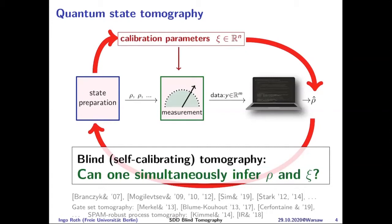A question arises about gate set tomography: is it proven to converge? Ingo clarifies it is absolutely not proven. What you're trying to do in gate set tomography is complete a matrix product state from its entries — you see a couple of entries of a tensor network and want to complete the entire tensor network. These are highly complicated problems. There are ideas to improve algorithms and data processing, but no significant steps yet toward proving under which conditions it converges.